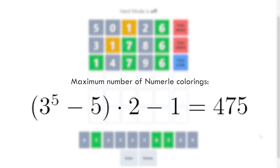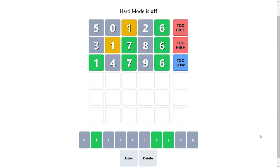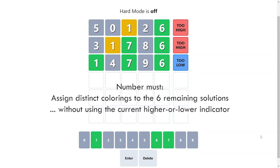With these 475 colorings, we just have to make sure our six solutions each has a unique coloring. It turns out, there are multiple numbers you could input as your fourth guess to always solve the game in five, and you don't even need the higher or lower counter. As a side puzzle, pause the video right now if you want to find a number that fits that description.